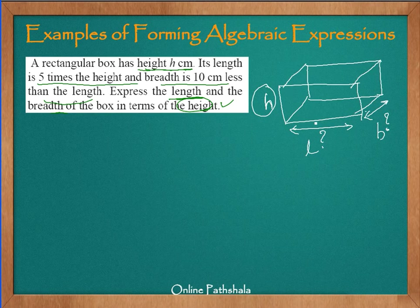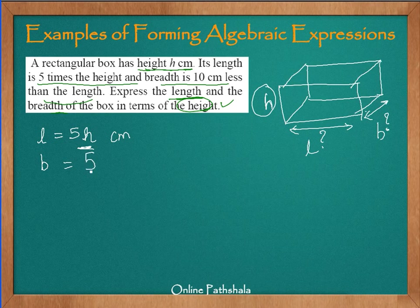Starting with the length: it is 5 times the height, so length equals 5h centimeters. Now for the breadth: the breadth is 10 centimeters less than the length. We already know the length is 5h, so the breadth is 5h minus 10 centimeters. These were three examples in which we learnt how to convert statements into algebraic expressions. In the next session we will see more examples of this type.